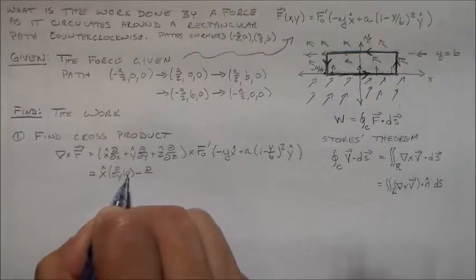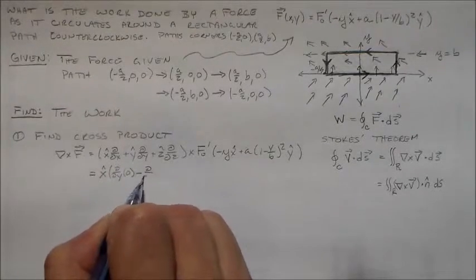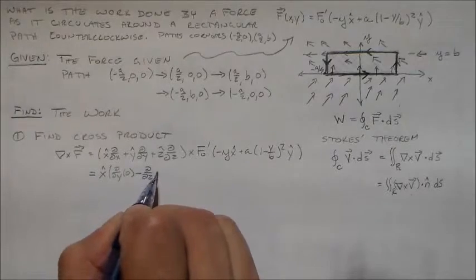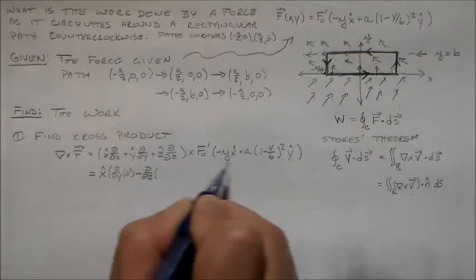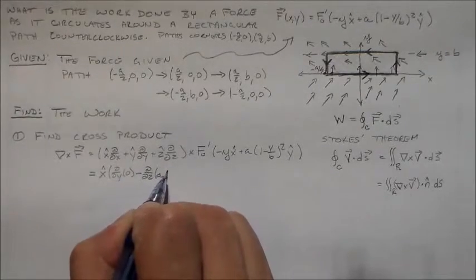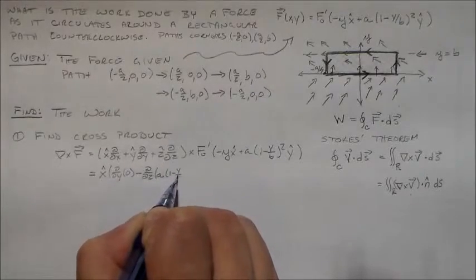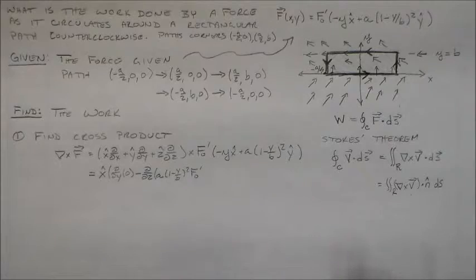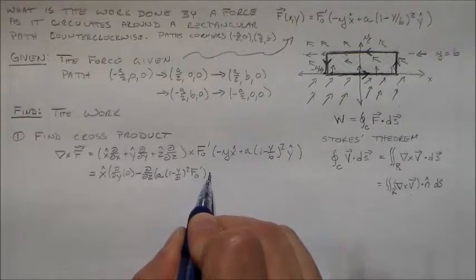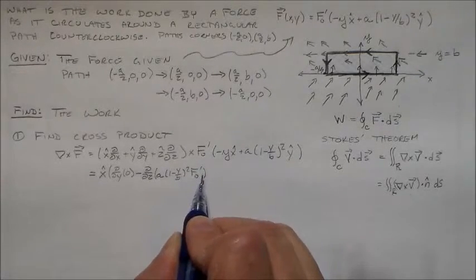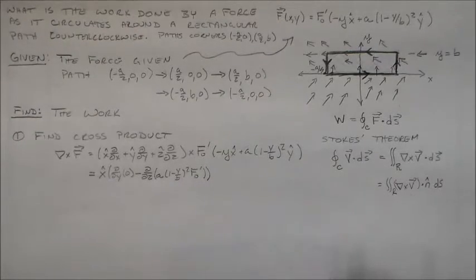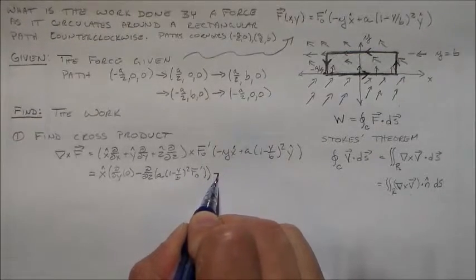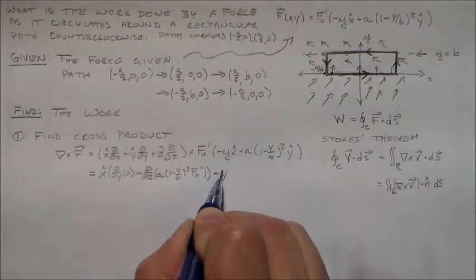Then we can add in the y component. Okay. So, x then y then z, y then z. d/dz of f naught prime times minus y. Minus d/dx of whatever z is, which is zero.